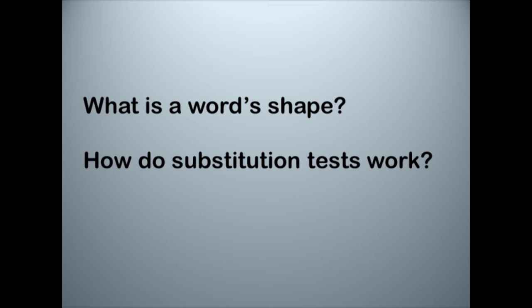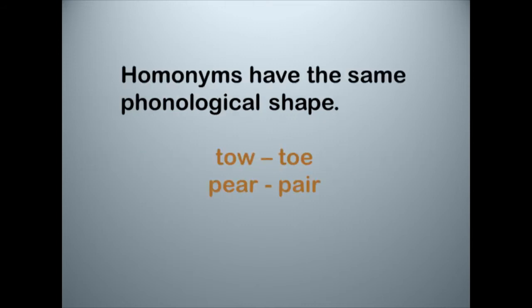To first deal with linguistic shape: even if you've never used the technical term linguistic shape, you have some familiarity with the concept because you already know what a homonym is. A homonym sounds like another word that is, however, a different word. So 'tow a car' but 'the toe on your foot,' or 'a pair that you eat' versus 'a pair of socks.' Those are homonyms. What we can say about those words is they have the same phonological shape — they sound the same.